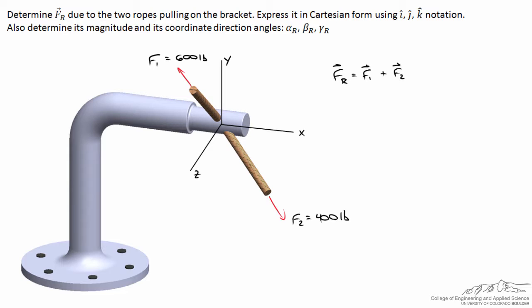Because FR is simply the vector sum of F1 and F2, to figure out FR in I, J, K hat notation we first need to figure out the x, y, and z components of both F1 and F2, then add those to come up with FR. At this point we know the magnitudes of F1 and F2, but we don't know the directions.